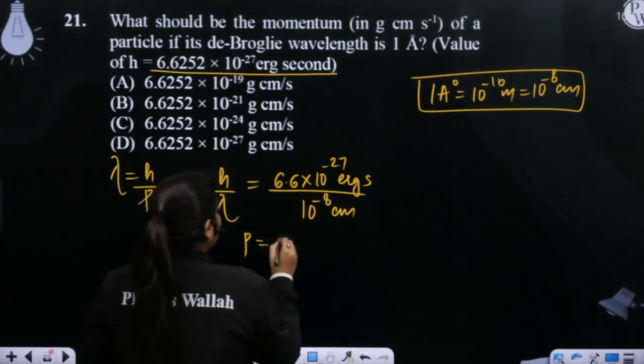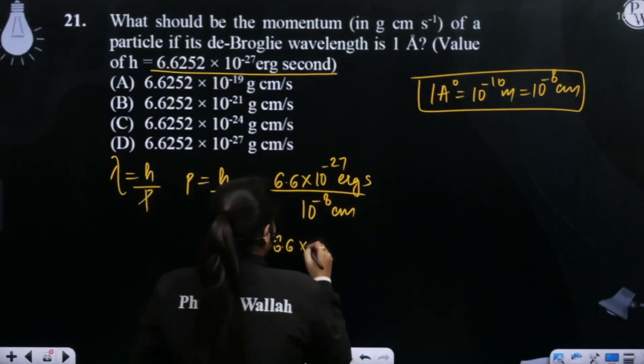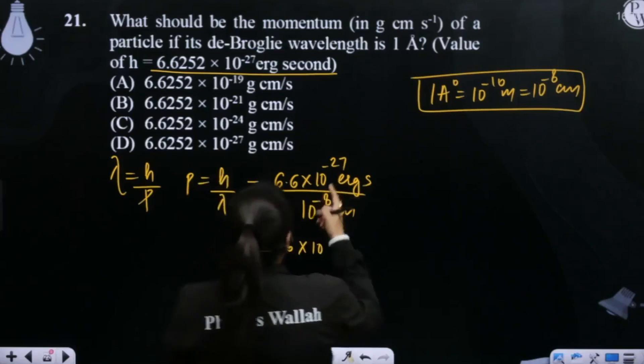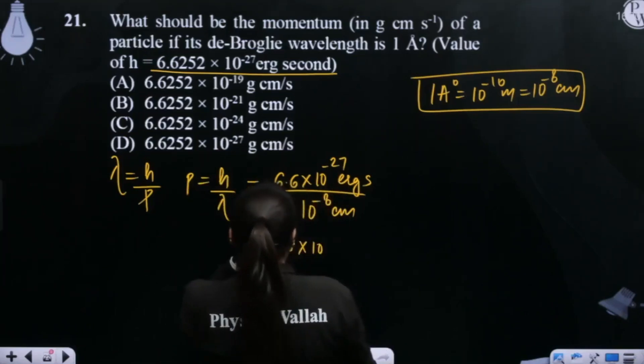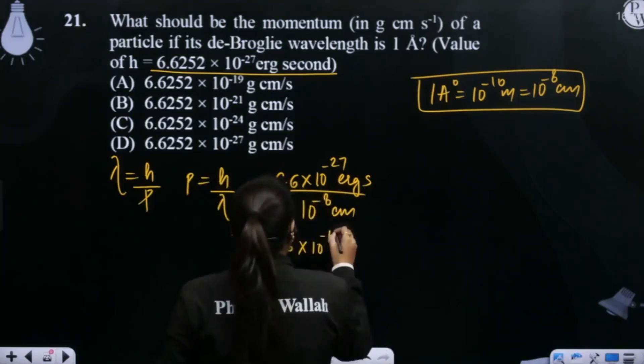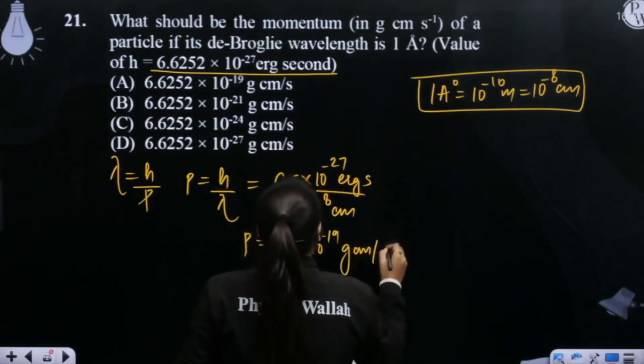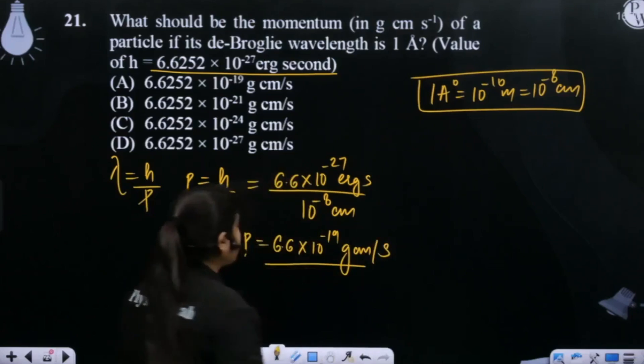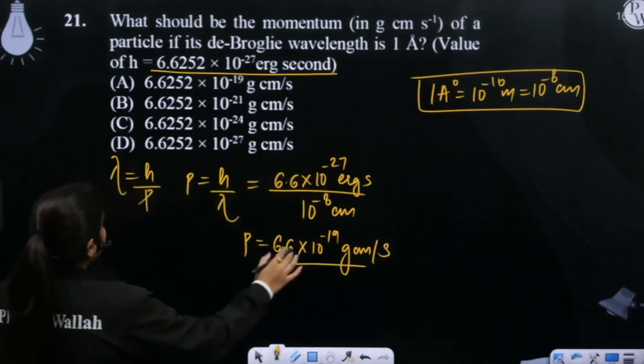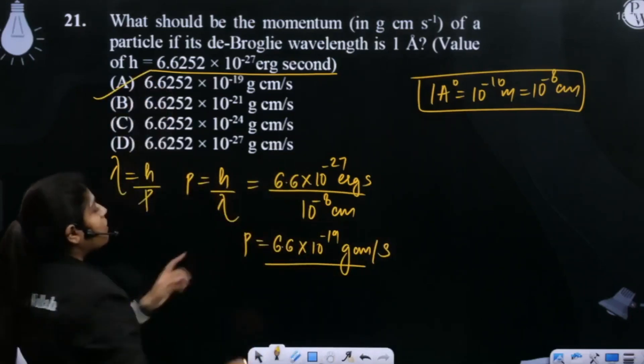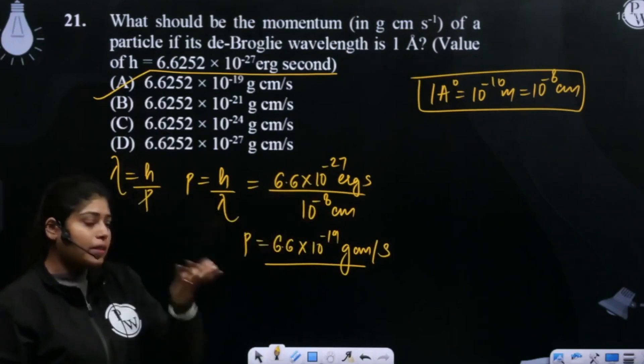So how much momentum will come from here? 6.6 into 10 to the power, this is minus 27, this is 8. How much will it come from? Minus 19 gram centimeter per second. So this is the answer. 6.6 into 10 to the power minus 19. 27 and 8 is 19 only.